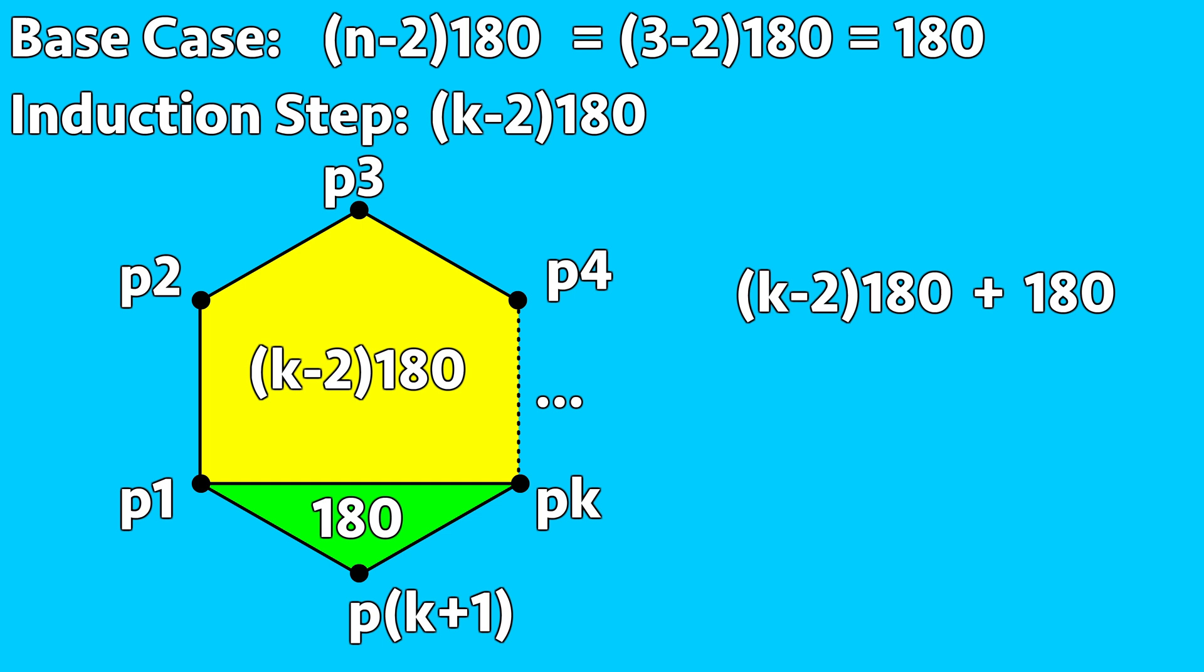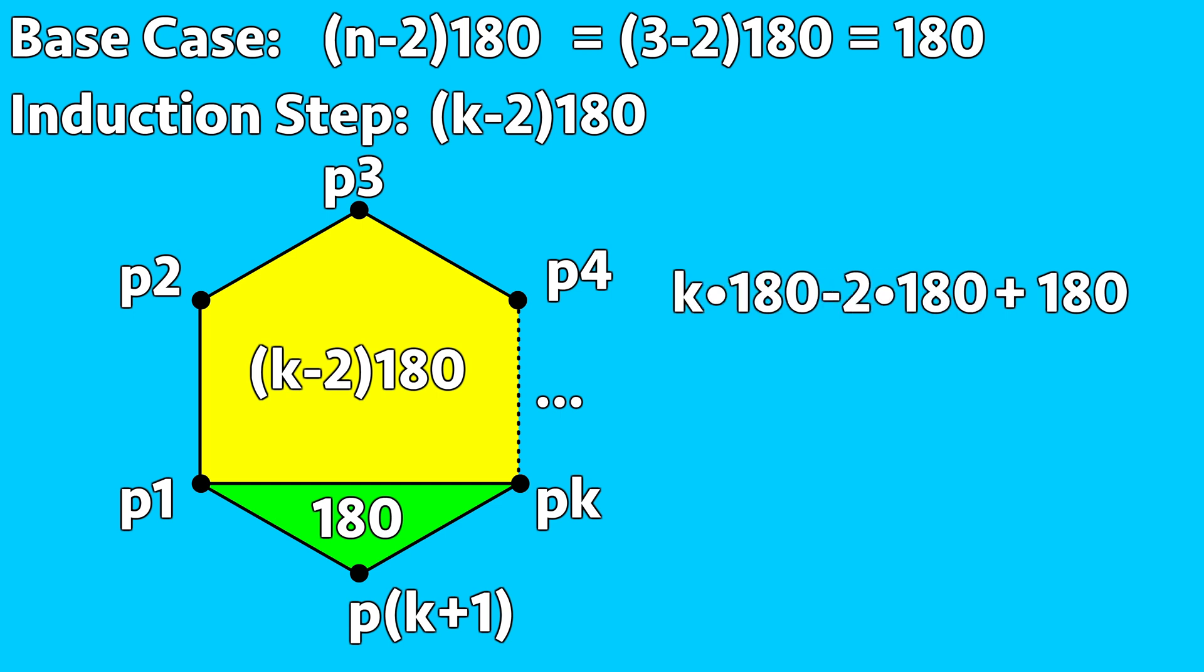Therefore, both polygons have a total of (k-2) times 180 plus 180 degrees. So we need to show this is in the same form as the induction hypothesis. First, let's distribute 180 inside the parenthesis.